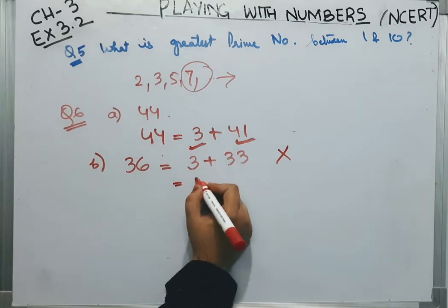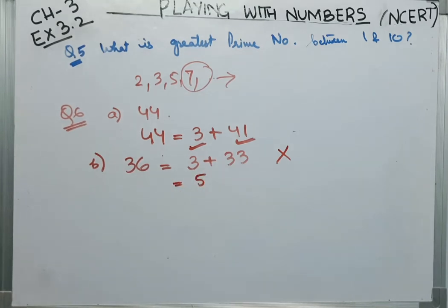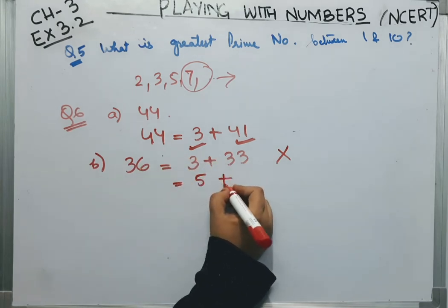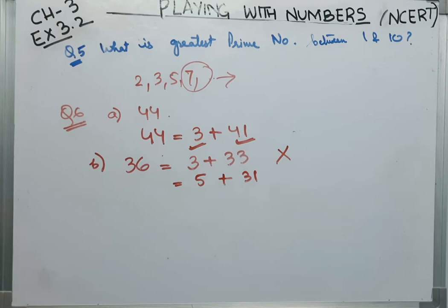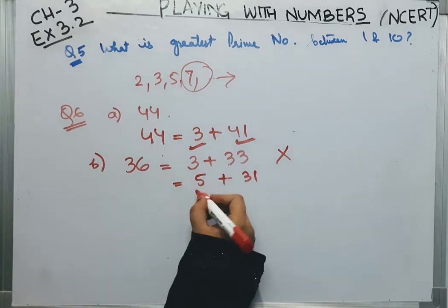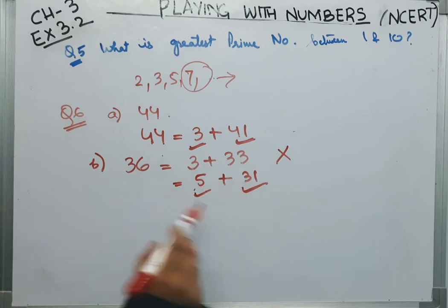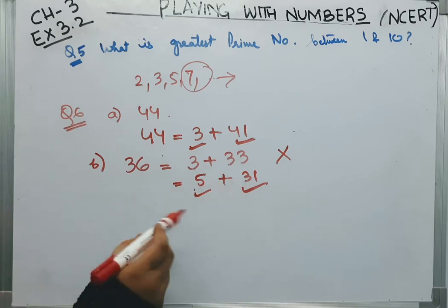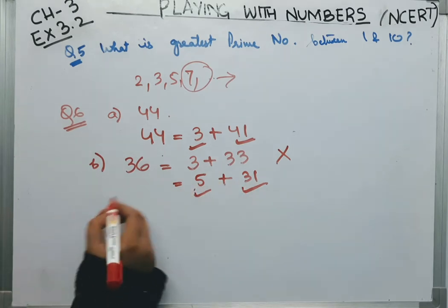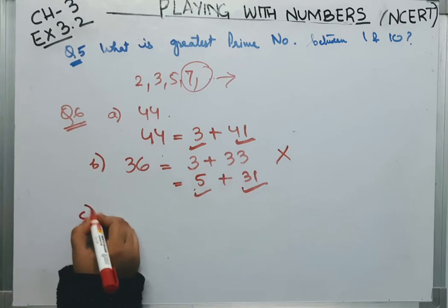Now, we will write, we will take 5 as an odd prime number. So, on adding 5 plus 31, we get 36. So, this completes the condition yehi hai. Donoh jo yehi hai. They are odd and they are prime numbers. So, 36 can be written as 5 plus 31.